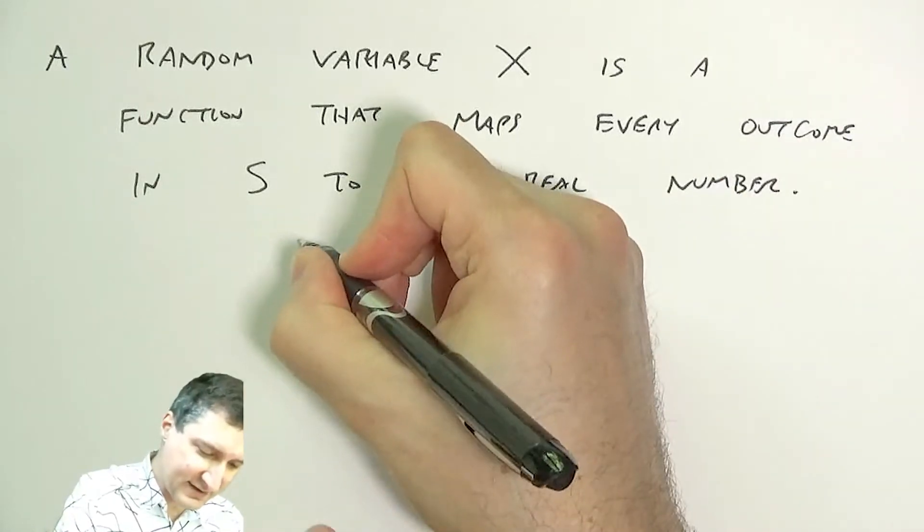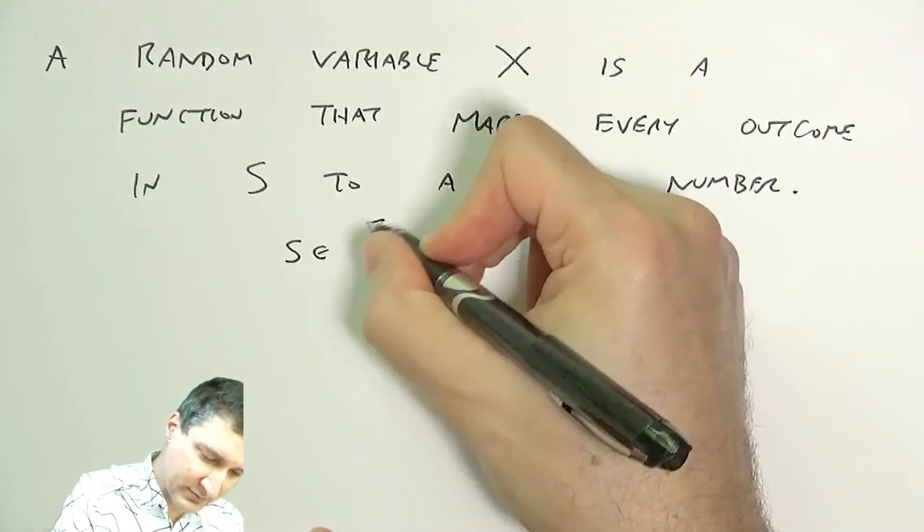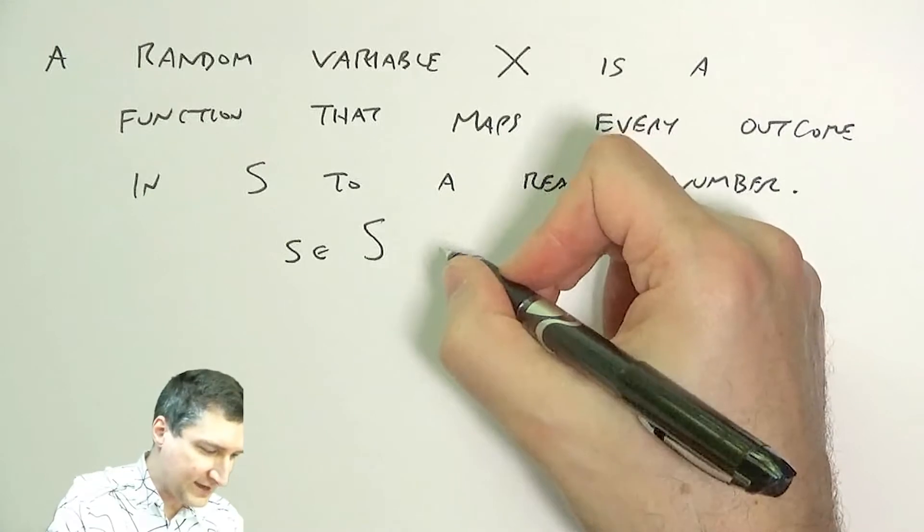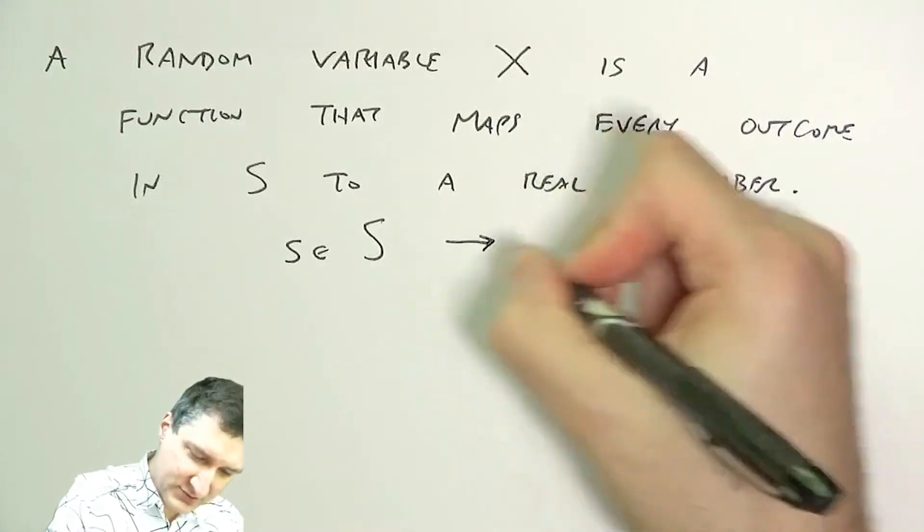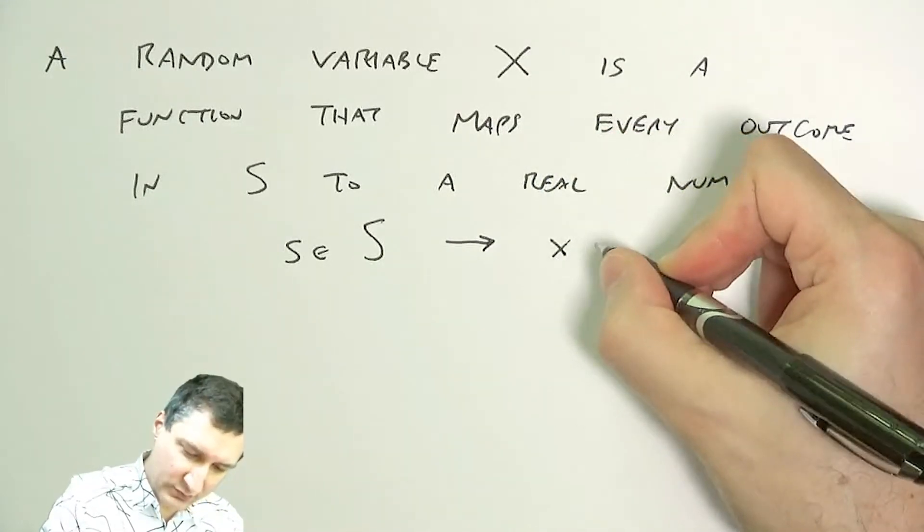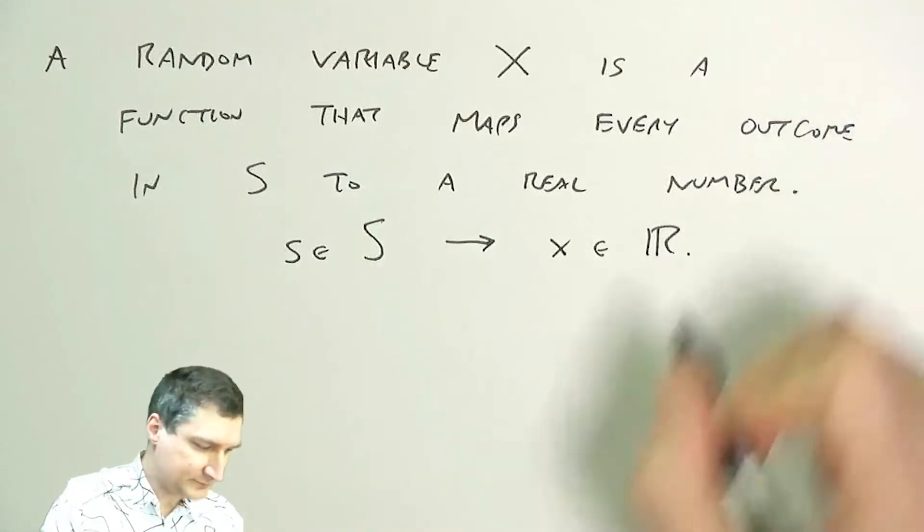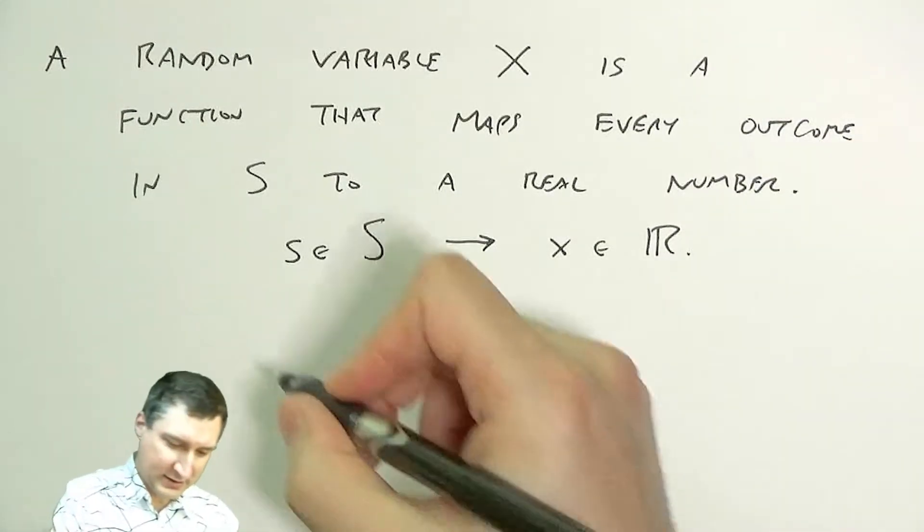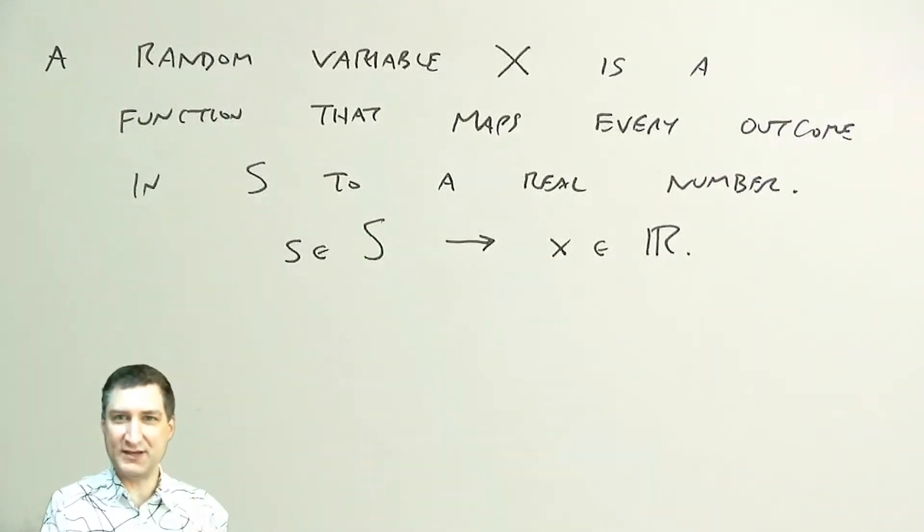It's like saying I have S, which is an outcome of the sample space, and that gets mapped to X, which is some real number. For example, it's easy to see how my previous sample spaces would map out of this concept.